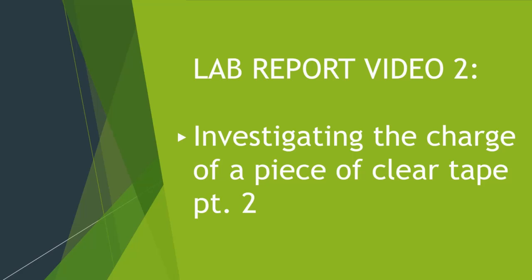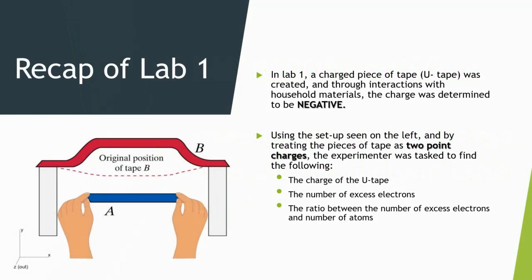This lab acts as a continuation from lab 1 where the experimenter was tasked to create a charged piece of U-tape and determine its charge qualitatively by interacting with household objects and quantitatively by treating the two pieces of tape as point charges. Through this approach, the experimenter also had to calculate the number of excess electrons on the U-tape and the ratio between the number of excess electrons to the number of atoms.